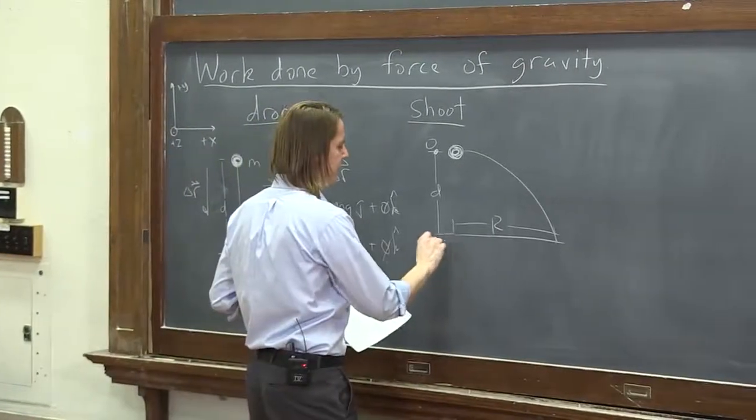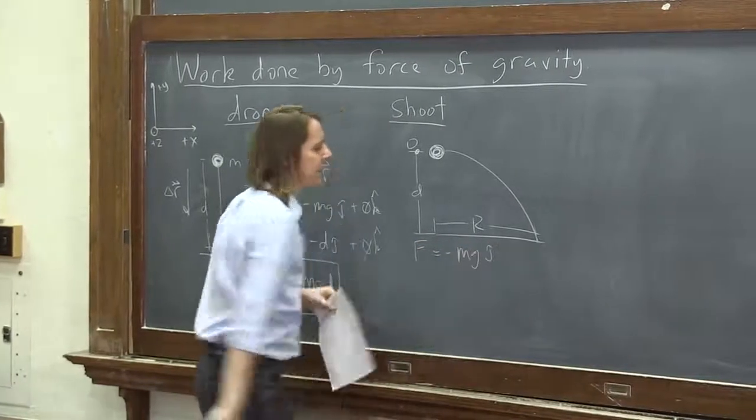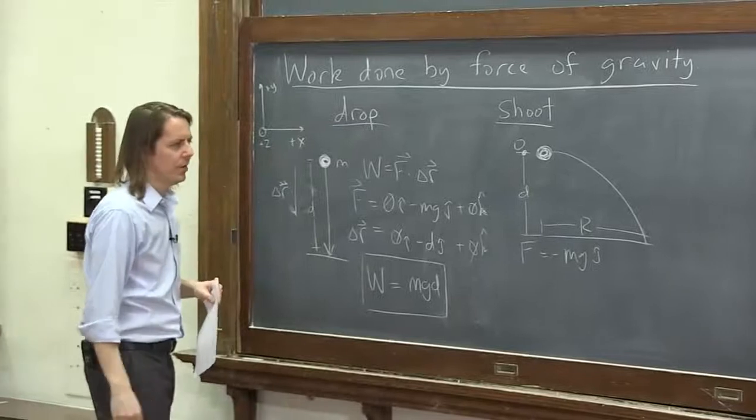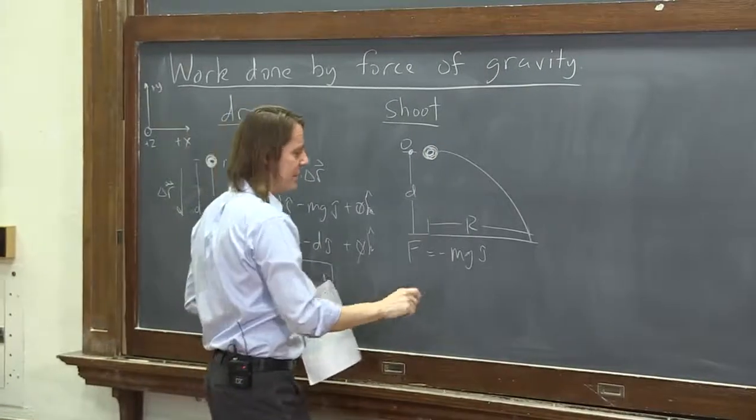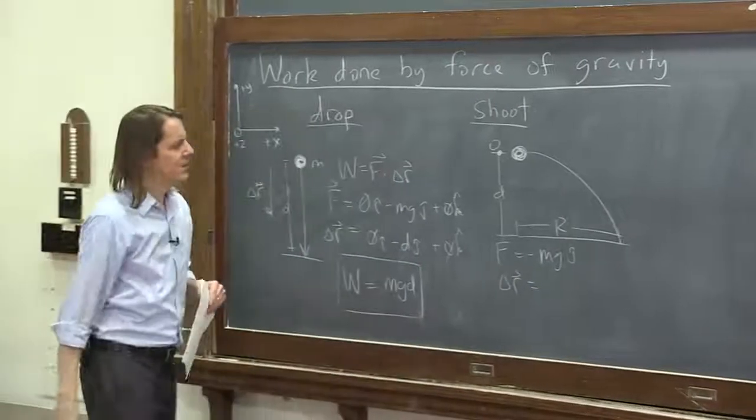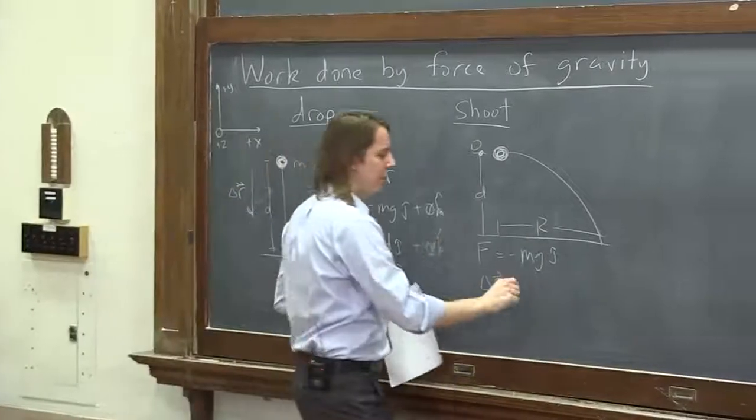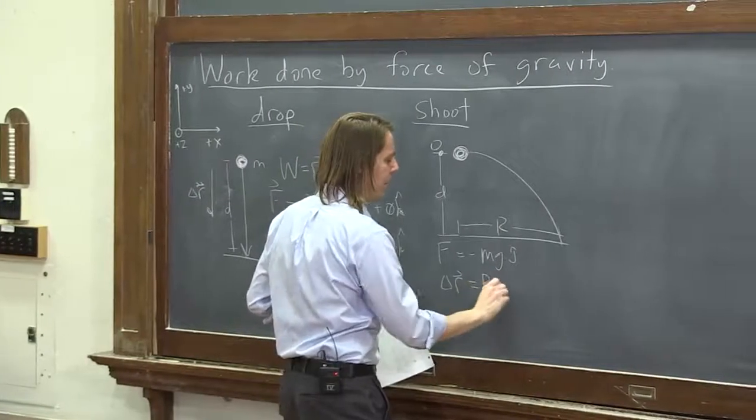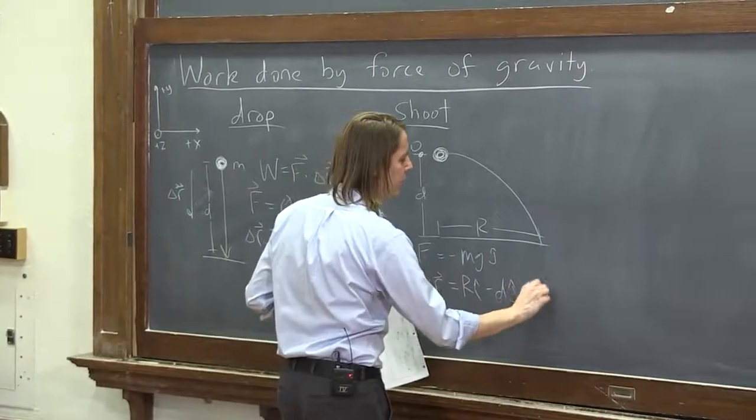The force, again, is only minus mg in the j-hat direction the whole time. There was no force in the x. It just had an initial velocity in the x. And the delta r, the displacement, was positive r i-hat, minus d j-hat, plus 0 k-hat.